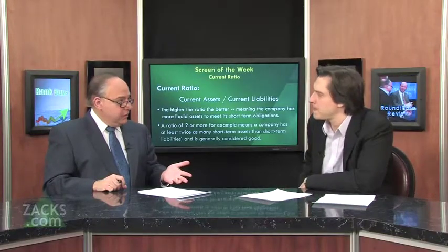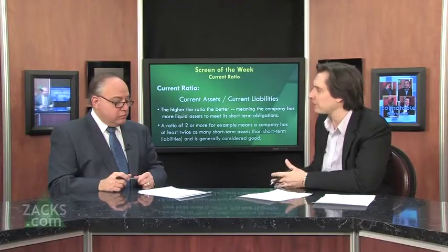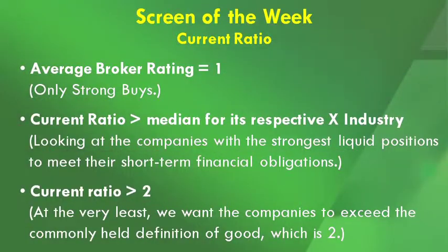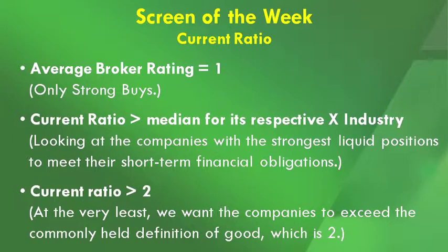We're looking at current ratios that are greater than the median for their industry, and we're also applying a bunch of other solid items to help flesh this screen out. We start off by looking at companies with an average broker rating of 1, so only strong buys are getting through. Then we want the current ratio to be greater than the median for its respective industry — we want companies with the strongest liquid positions to meet their short-term obligations. We also want to make sure the current ratio is still above 2, so companies must exceed the commonly held definition of good.